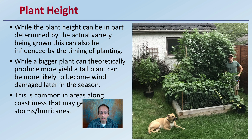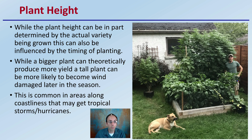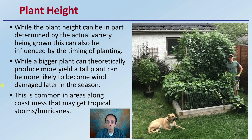While planting height is in part determined by the actual variety being grown, it can also be influenced by the timing of the planting. While a bigger plant can theoretically produce more yield, a tall plant can be more likely to become wind damaged later in the season. This is common in areas near coastlines that may get tropical storms or hurricanes, so take that into consideration as well.